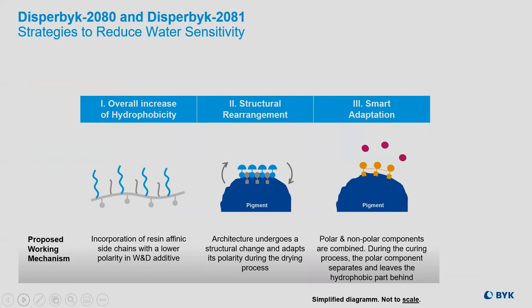We've incorporated a few strategies to reduce that water sensitivity. The first is to use resinophilic side chains with lower polarity systems to shift the hydrophilicity toward hydrophobicity. The second is to use a structural rearrangement that takes place during the curing phase. The third is to use smart adaptation, where both polar and nonpolar component parts allow for the hydrophobic portion to be left behind after the curing phase.